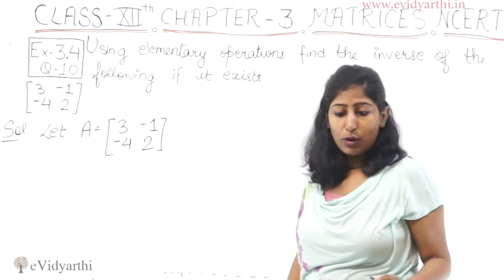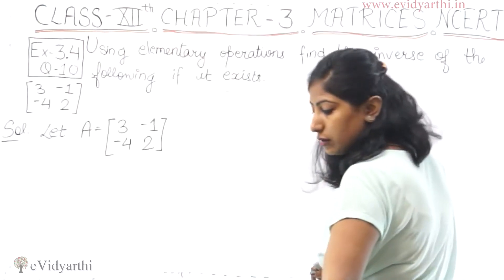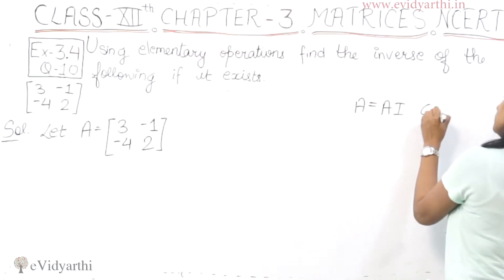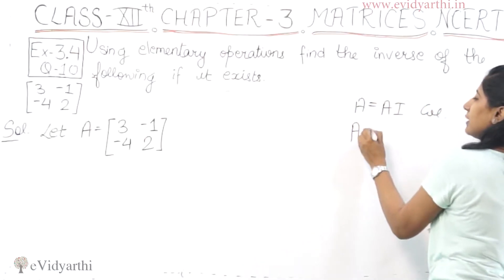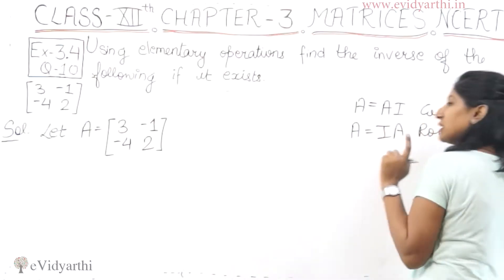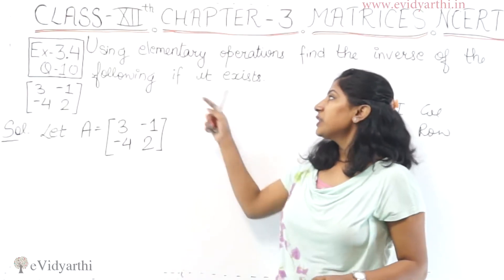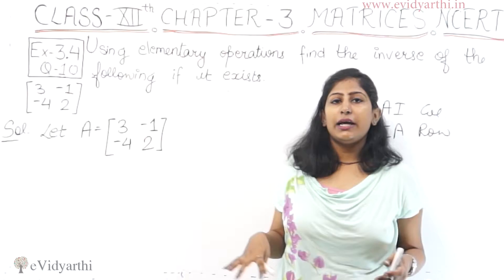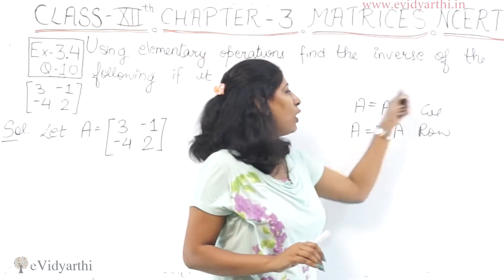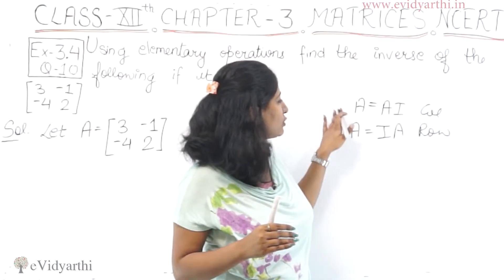Because I am using column operation, I will use this formula: A is equal to A times I for column operation. And if row operation is used, then A is equal to I times A. You can use any operation if it is specified in the exam. If the question says row, then use the formula A = IA and row operations. If it says column operation, use A = AI and column operations.